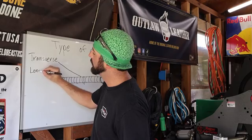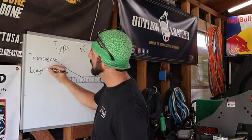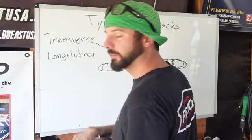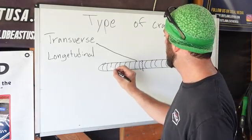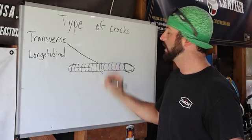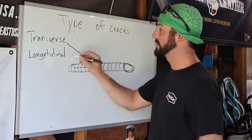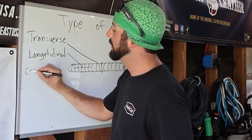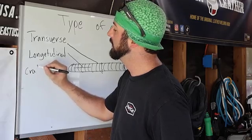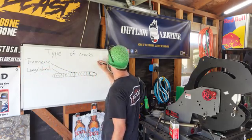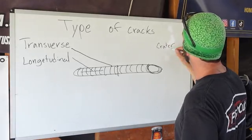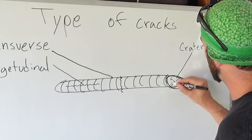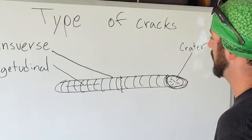Then you have your longitudinal crack — don't spell check me on that — which goes along the length of the weld itself. Then there's crater cracking, which occurs in the crater, usually kind of star-fishing out a little bit like that.